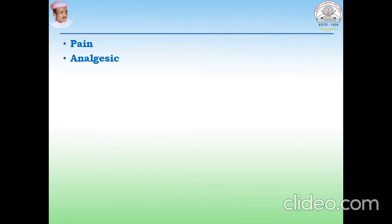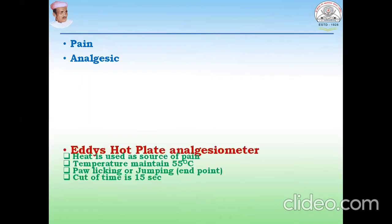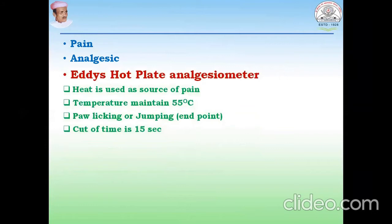In a preclinical study, we use different models for screening of any type of analgesic drug. Here we will discuss the EDIS hot plate analgesic meter. This instrument works on heat — heat is the source of pain here.